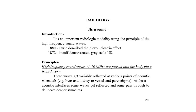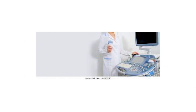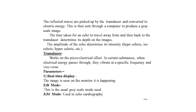These waves get variably reflected at various points of acoustic mismatch — for example at the liver and kidney interface, or vessels and parenchyma. At acoustic interfaces, some waves get reflected and some pass through to delineate deeper structures. The reflected waves are picked up by the transducer and converted to electrical energy, which is sent through a computer to produce a gray scale image. The time taken for an echo to return determines its depth.